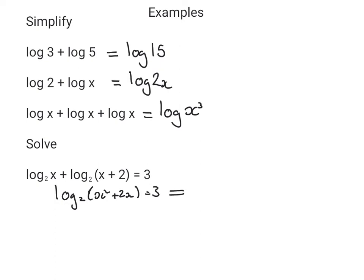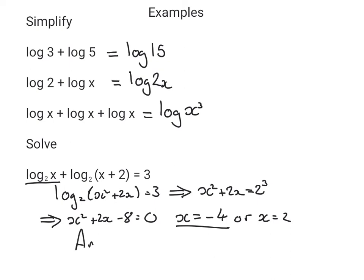Well, that implies that x squared plus 2x equals 2 to the power of 3, which is 8. So that implies that x squared plus 2x minus 8 equals 0. If we solve this quadratic, we're going to get x equals minus 4 or x equals 2. But because logs must always be positive, that means that minus 4 is not possible, so the answer is x equals 2.